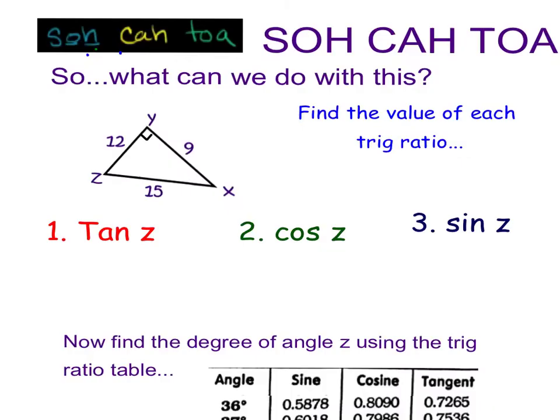So the first thing you're going to do with SOH-CAH-TOA is just find the value of each trig ratio. So tangent of Z. First I'm going to find my angle that I'm talking about. Here is Z. Compared to this angle, I then label all of my sides. Here's my right angle, so opposite of that is going to be my hypotenuse. And the one next to Z, next to means adjacent, so this is my adjacent side. And the one across from Z is my opposite.